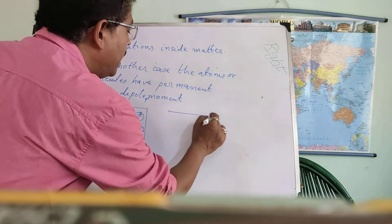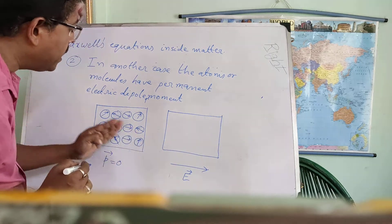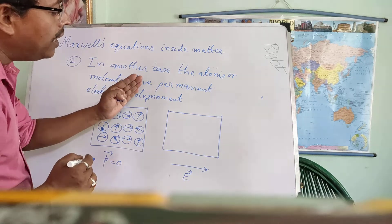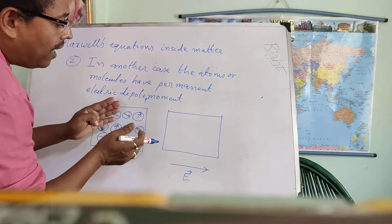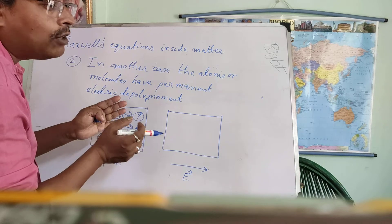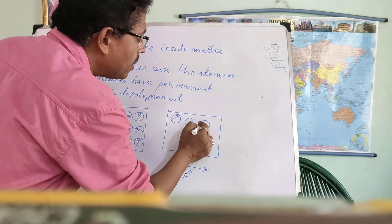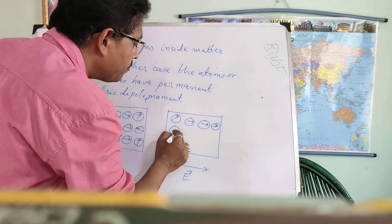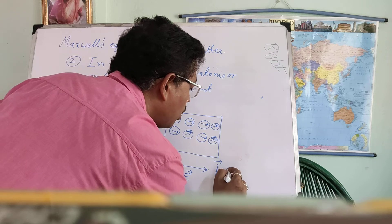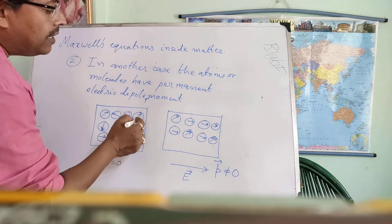But if we apply an external electric field, this field applies a torque on the individual dipoles and they will tend to align in the field direction. Due to temperature there are thermal motions and the individual atoms and molecules are colliding with each other, which disturbs this alignment. But still there will be a net dipole moment in the direction of the field, and the vector sum of all individual tiny dipoles will not be equal to zero — we say the dielectric is polarized.